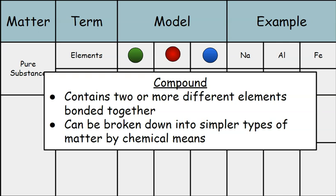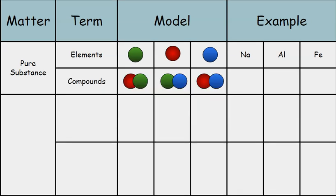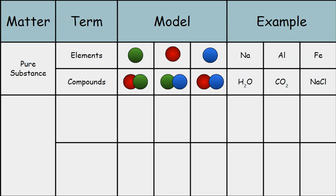The other type of pure substance we have to discuss are compounds. They contain two or more different elements bonded together, and they can be broken down into simpler types of matter by chemical means. Compounds have two or more elements bonded together. Some examples include H2O, CO2, and NaCl.